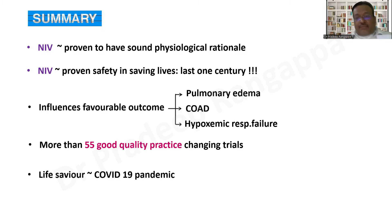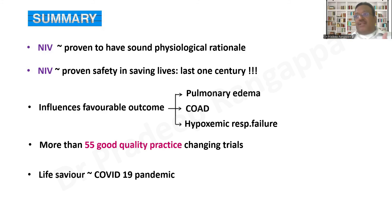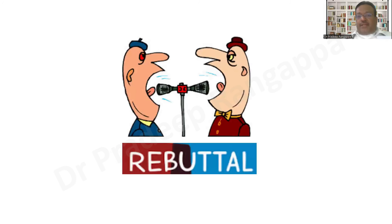Even during the COVID-19 pandemic, NIV was shown to be superior to HFNO. HFNO initially created waves but was later clearly shown to be inferior — at least in conserving oxygen. In Karnataka, HFNO was depleting oxygen resources enormously, and we had to shift strategy toward NIV, which conserves oxygen better. Even from a resource optimization standpoint, NIV proved superior in the pandemic.